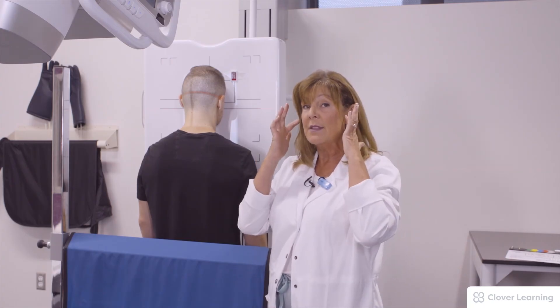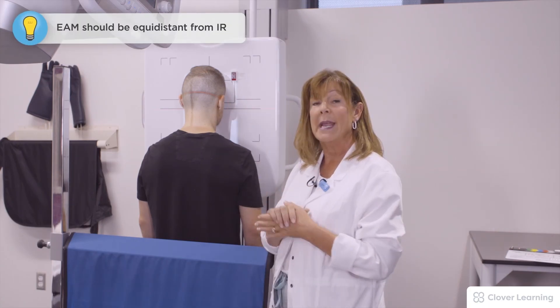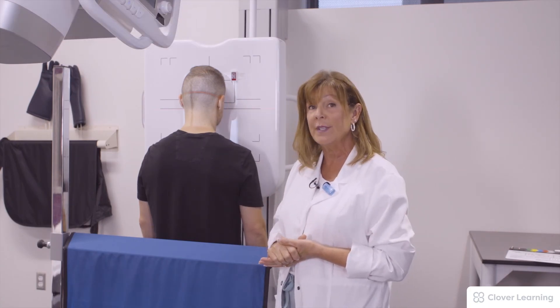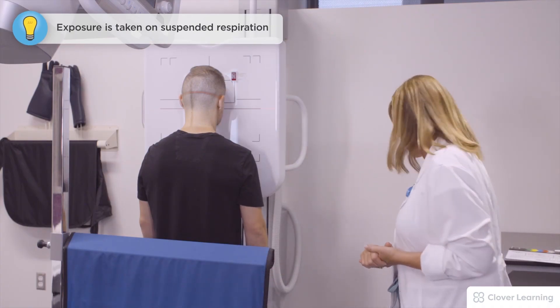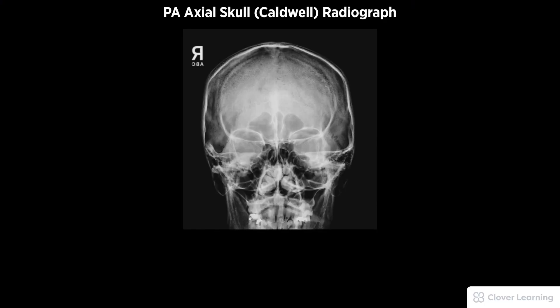I've also made sure that there was no rotation of the skull by confirming that the external auditory meatus, the EAMs, are of equal distance from the board. The patient will hold very still and the exposure is made. A diagnostic PA Axial Skull Caldwell view radiograph must be free of motion and rotation. Demonstrated anatomy includes symmetric petrous ridges, with petrous pyramids lying in the lower third of the orbit, and proper visualization of soft tissue and bony detail.